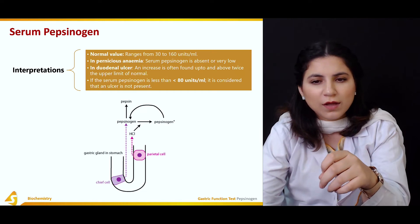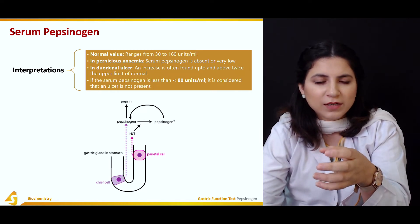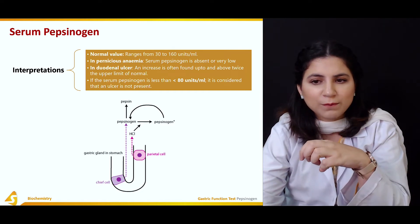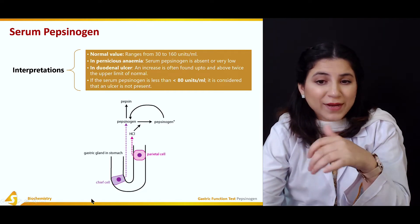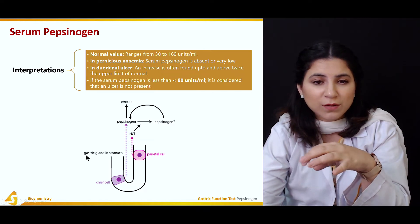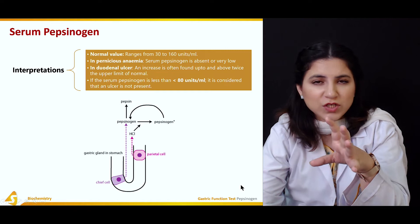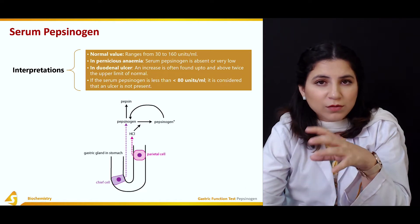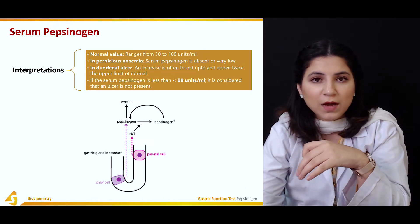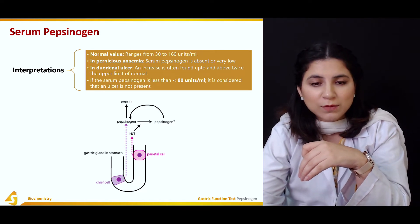In duodenal ulcer, there is an increase found in serum pepsinogen, often up to or above twice the upper limit of the normal average. The person can have about 160–170 to maybe 300 units per milliliter of pepsinogen in their serum.